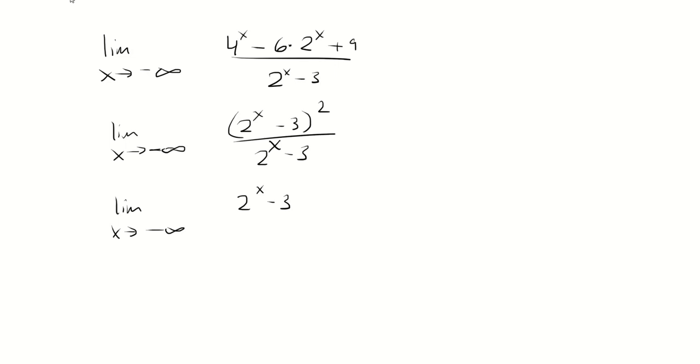As x approaches negative infinity, 2 to the x will go to 0. So we have 0 minus 3 gives us negative 3 as our limit.